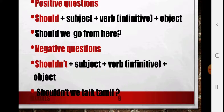For positive questions using the modal 'should,' the structure is: should + subject + verb + object. Here, when making a question, the modal is kept as the first word. Examples: 'Should we go from here?', 'Should we stay home?', 'Should we study now?', 'Should we prepare dinner?' For negative questions: shouldn't + subject + verb + object. Examples: 'Shouldn't we talk Tamil?', 'Shouldn't we go out?', 'Shouldn't we talk Gujarati?' This way you can use 'should' for positive as well as negative questions.